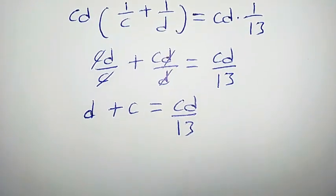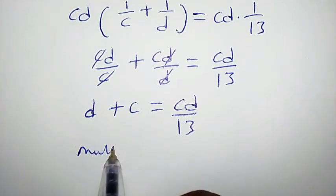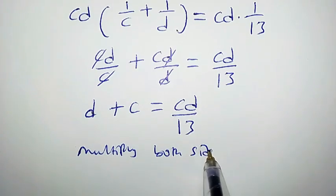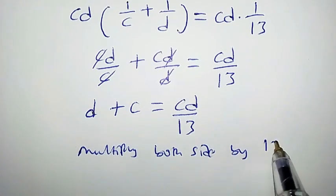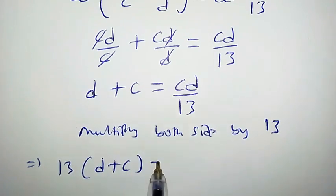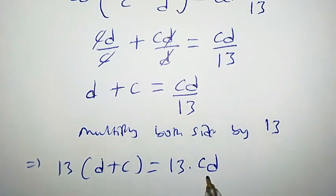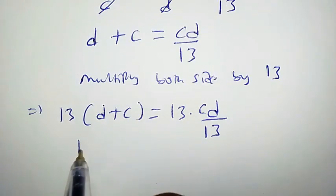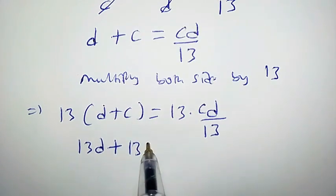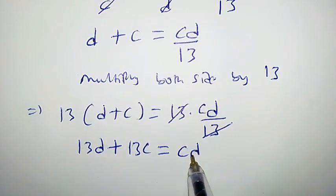The second step we are going to take now is to multiply both sides by 13. We have 13 times d plus c equal to 13 times cd over 13. That gives 13d plus 13c equal to cd, since 13 cancels 13, and we are left with cd.